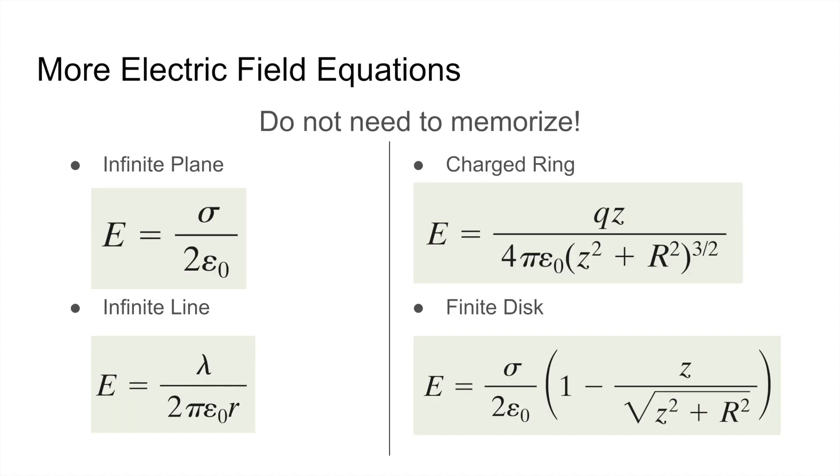These following electric field equations are for a distribution of charges. You do not need to memorize these. For an infinite plane, the electric field is given by the surface charge density divided by 2 times epsilon zero, and the surface charge density is just how much charge there is per unit area. Note that there is no distance in this electric field equation, which means that the electric field caused by an infinite plane only depends on the surface charge density.